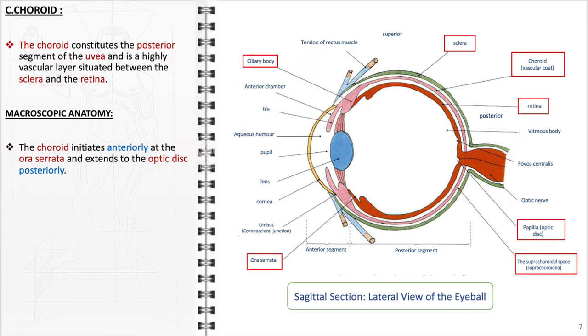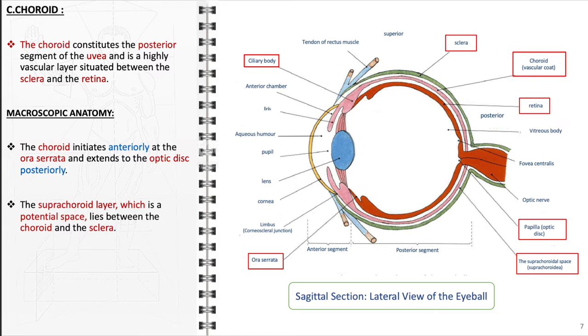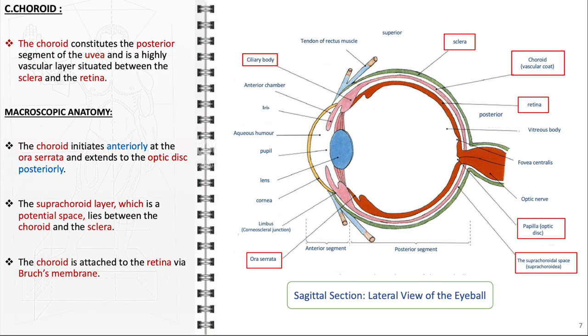Between the choroid and the sclera is the suprachoroid layer, a potential space known for its rich network of capillaries and larger blood vessels, facilitating an exchange of nutrients and wastes. The choroid is firmly bound to the retina by Bruch's membrane, an elastic layer that serves as critical support for the retina's outer layers, ensuring their proper positioning and function.